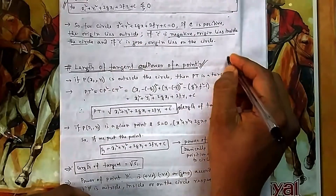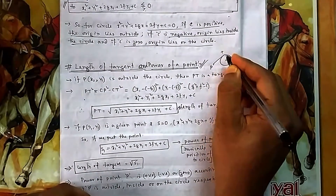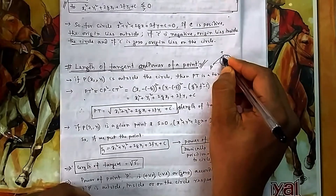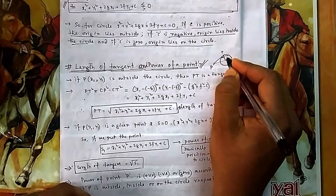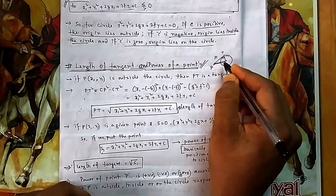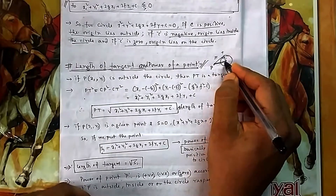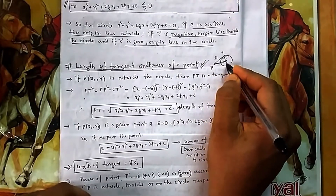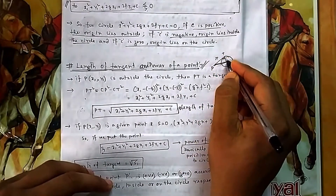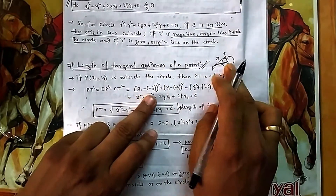Suppose P is lying outside the circle, and PT is the tangent. The angle at the point of tangency is 90 degrees. To find PT, we apply the Pythagorean theorem: PT² = CP² − CT², where CP is the distance between the center and the external point, and CT is the radius.